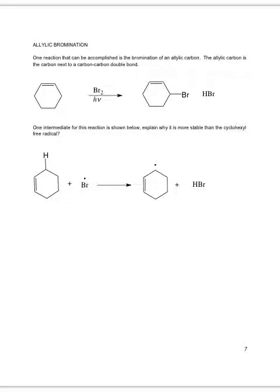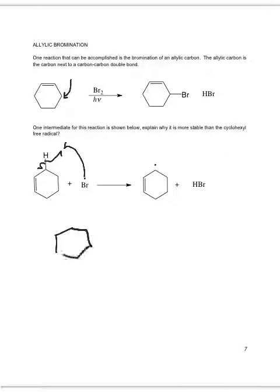Here we have another free radical reaction: an alkene reacting with bromine and light. The bromine ends up on the allylic carbon — the one next to the carbon-carbon double bond. In a propagation step, the bromine free radical would abstract the hydrogen off of the allylic carbon to give us this free radical, and we should be able to explain why this is the most stable free radical.